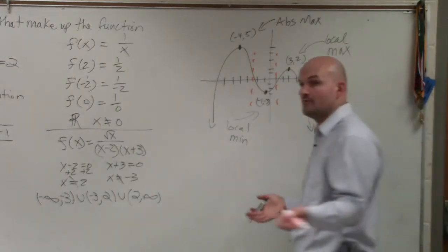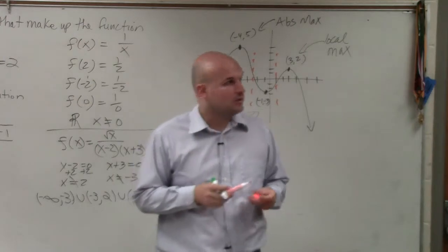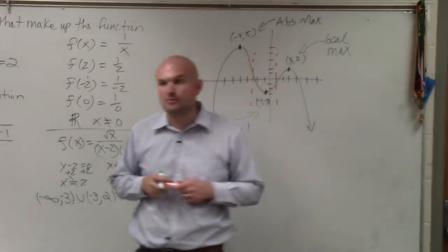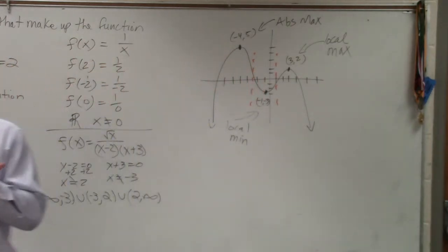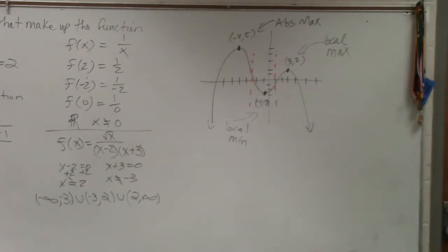And you can have more than one local max, more than one local min, more than one absolute max, more than one absolute min, as long as they're at the same values. OK? But there is no absolute min because the graph continues indefinitely. So when you have the graph,